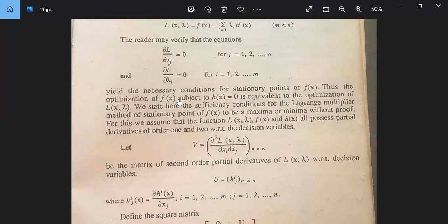Thus, the optimization of F(x) subject to H(x) equal to 0 is equivalent to the optimization of L(x, lambda). We state here the sufficiency conditions for the Lagrangian multiplier method for a stationary point of F(x) to be a maxima or minima without proof.